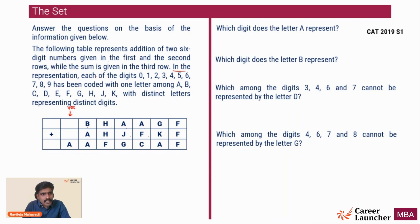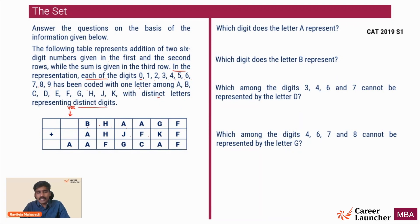In the representation, each of the digits 0 through 9 — all 10 digits — has been coded with one letter among A, B, C, D, E, F, G, H, J, and K. There is no I. A, B, C, D, E, F, G, H, J, and K is the coding given to the 10 digits 0 to 9 in whatever order, with distinct letters representing distinct digits.